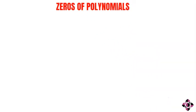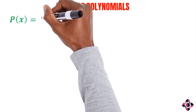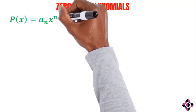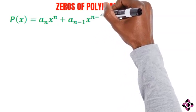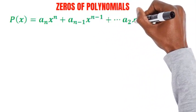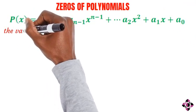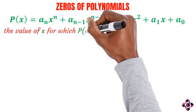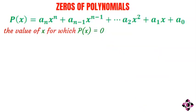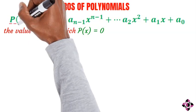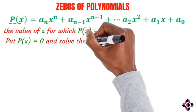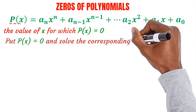Zeros of polynomials. Given this polynomial, p of x equals a sub n x raised to power n plus a sub n minus 1 x raised to power n minus 1 plus a sub 2 x squared plus a sub 1 x plus a naught, the values of x for which p of x is equal to zero are called the zeros of the polynomial. To find the zero of the polynomial p of x, put p of x equal to zero and solve the corresponding equation.